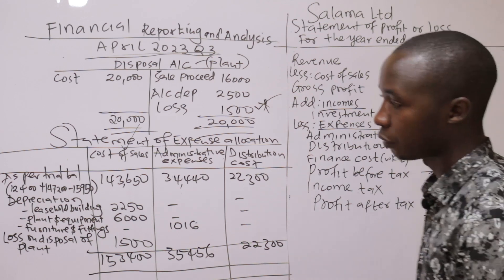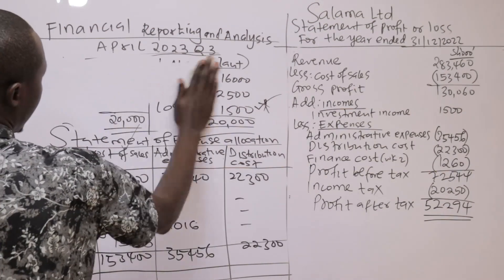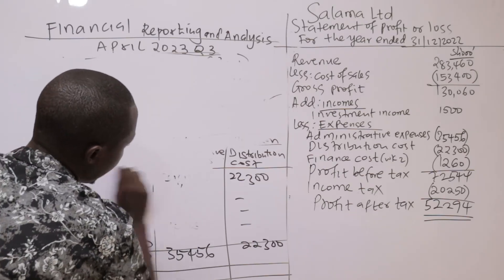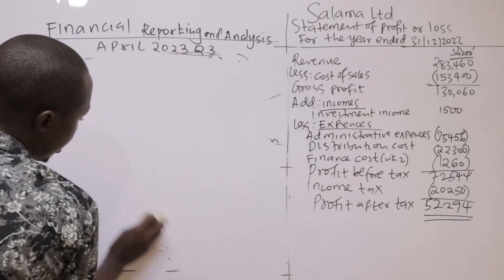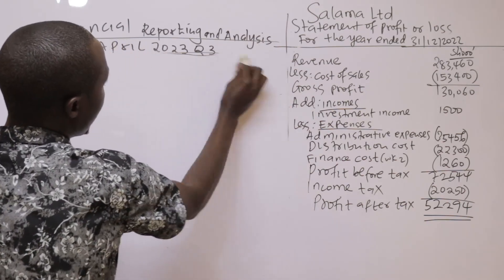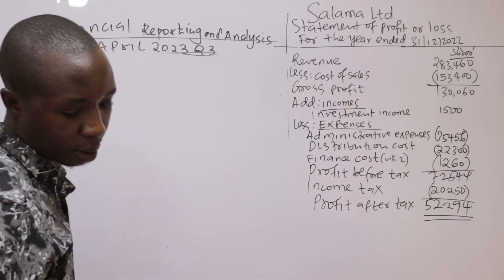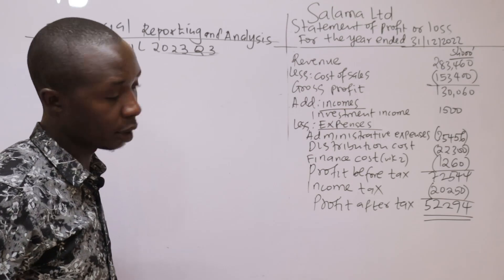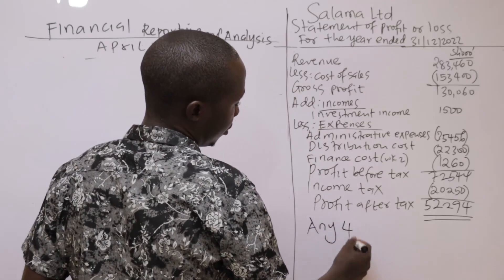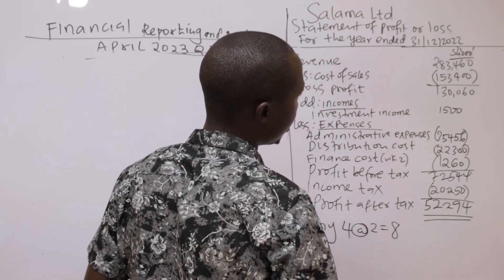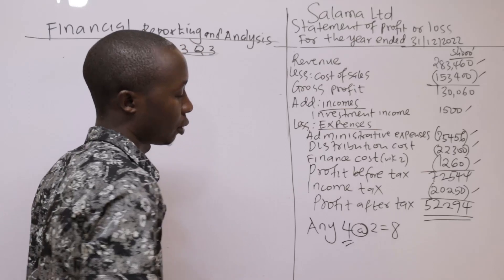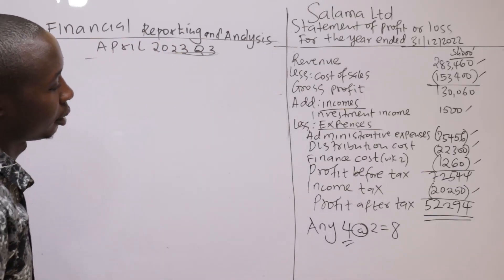There are no other comprehensive incomes. The statement of profit or loss was awarded 8 marks, with the examiner requiring any 4 correct items at 2 marks each to earn the full 8 marks. Out of 7 line items available, getting 4 correct earns 8 marks.